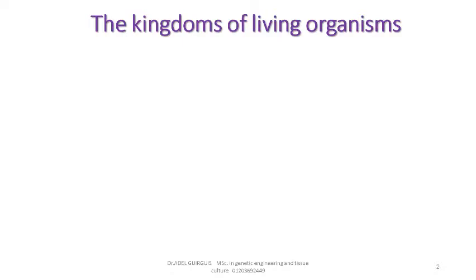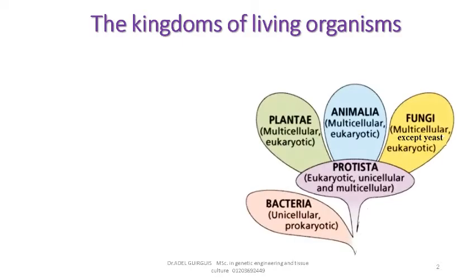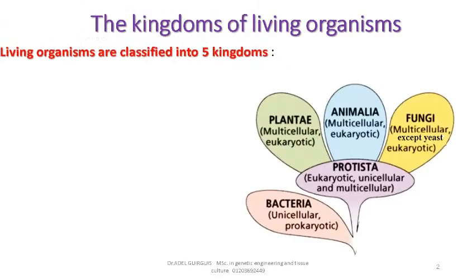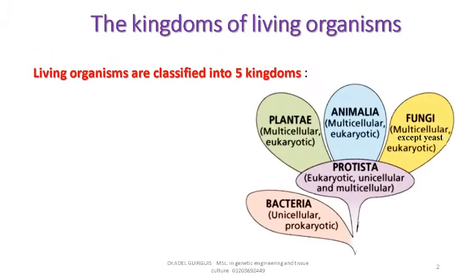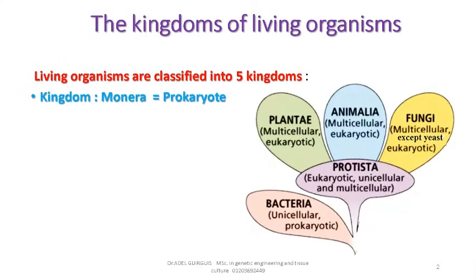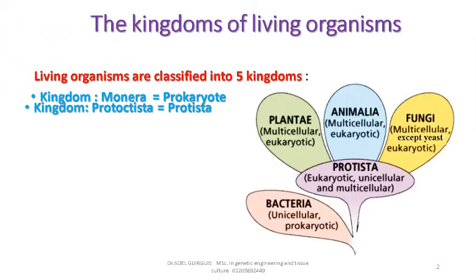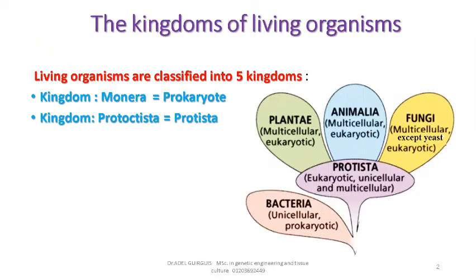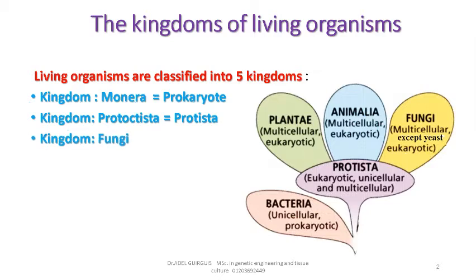The Kingdoms of Living Organisms. Living organisms are classified into five kingdoms: Kingdom Monera or Prokaryote, Kingdom Protoctista or Protista, Kingdom Fungi, Kingdom Plantae or Plant, and Kingdom Animalia or Animal.